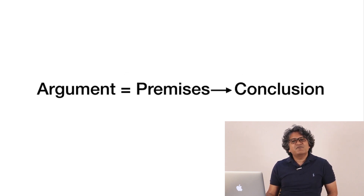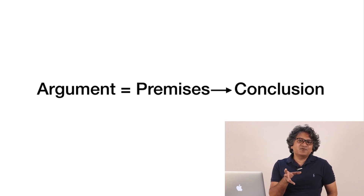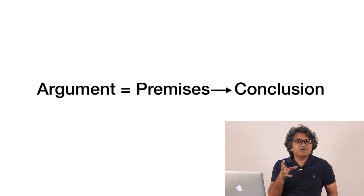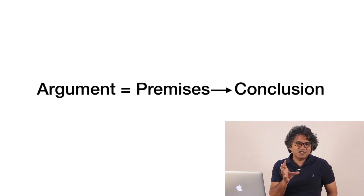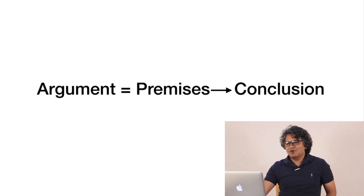The meaning of the word 'argument' in reasoning is more specific: it is when a conclusion is reached with the help of some data. The official word for that data or evidence or facts is 'premise.' Formally, an argument in reasoning is when, with the help of some premises, you reach a conclusion.